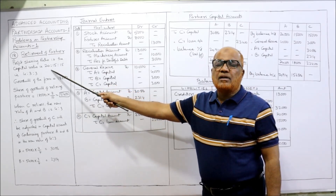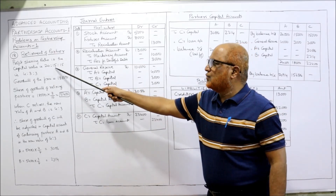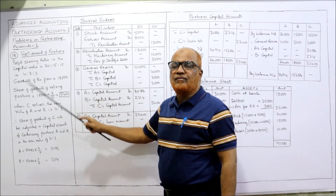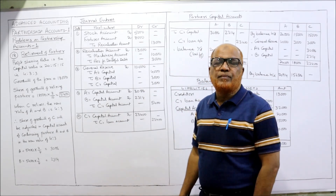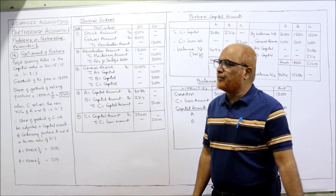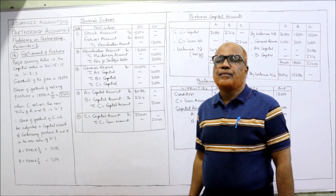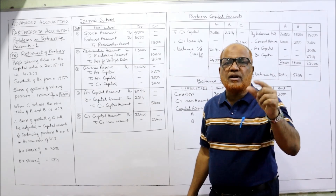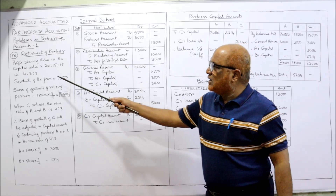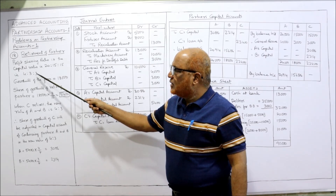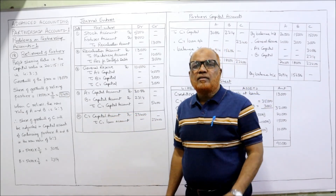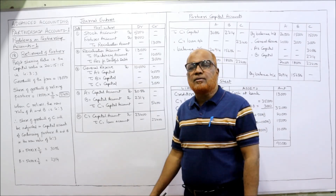Capital is 20,000 : 15,000 : 15,000, or 4:3:3 — all values divisible by 5. This is the profit sharing ratio. Goodwill of the firm is 18,000 as given. Now the share of goodwill of retiring partner C: C's share is 3/10 (since 4+3+3=10). So 18,000 × 3/10 = 5,400. The share of goodwill of retiring partner C is 5,400.